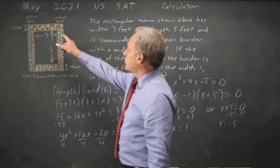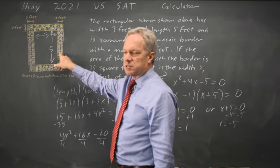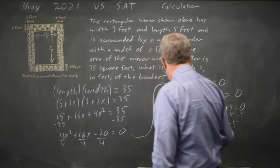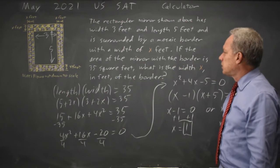A width of negative 5 does not make sense in the context of the problem, but a width of 1 does. X equals 1.